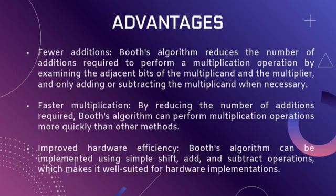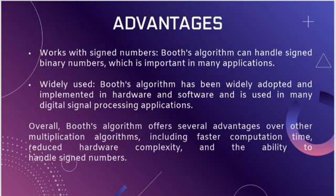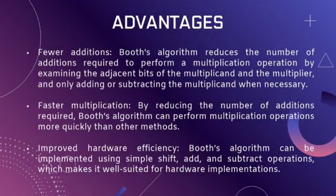I am Adit Taviknarkar, explaining the advantages of Booth's algorithm. Key advantages include: fewer additions — Booth's algorithm reduces the number of additions required by examining adjacent bits of the multiplier and only adding or subtracting the multiplicand when necessary. Faster multiplication — by reducing additions, Booth's algorithm performs multiplication more quickly than other methods. Improved hardware efficiency — it can be implemented using simple shift-add-subtract operations, making it well-suited for hardware implementations.